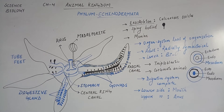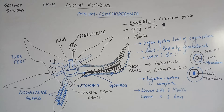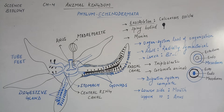इसके विपरीत Diploblastic Organisms होते हैं, जिनमें सिर्फ Ectoderm और Endoderm Layer Present होती है. उनमें Mesodermal Layer Present नहीं होती है, उनका Embryonic Development दो Layers से होता है. Adult की बात करें तो Adult को हम Coelomate Organisms भी बोलते हैं क्योंकि उनमें True Coelom Present होती है. इससे पहले Pseudo-Coelom Present थी Aschelminthes में. लेकिन Annelida, Arthropoda, Mollusca और अब Echinodermata - सारे Organisms Coelomate हो गए.